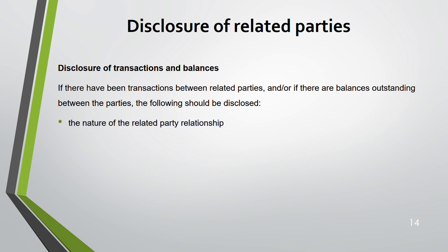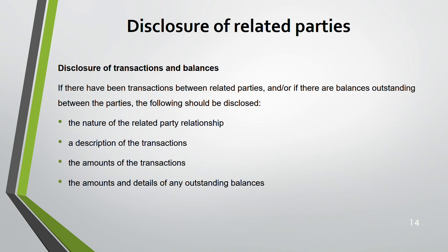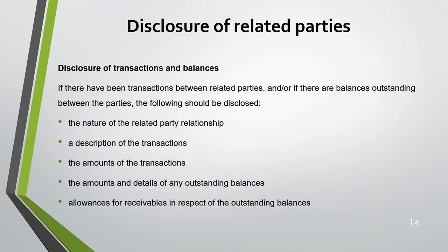Disclosure of transactions and balances must include: the nature of the related party relationship, a description of the transaction, the transaction amount, any outstanding balances, allowances for receivables, and irrecoverable bad debt expense. Related party transactions are high-risk areas in audit and require more rigorous disclosure precisely because it is easy to manipulate prices and hide large amounts.